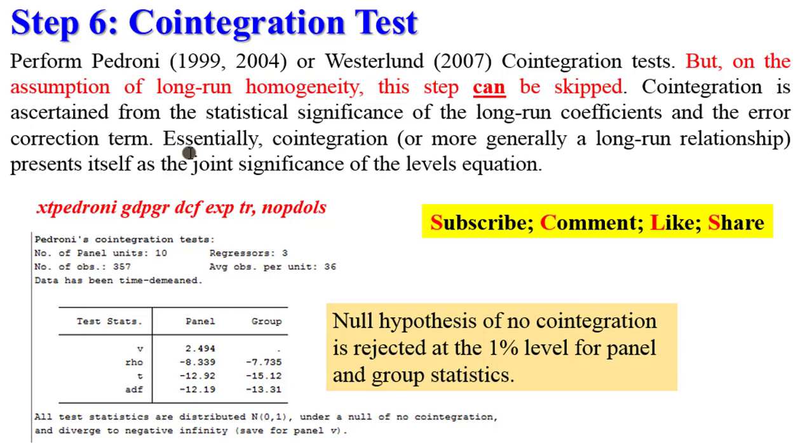If you're assuming long-run homogeneity, you can skip this test. Co-integration is ascertained from the statistical significance of the long-run coefficients and the error correction term. Essentially, co-integration or more generally a long-run relationship presents itself as the joint significance of the levels equation. That means by performing the PMG analysis you can infer co-integration from the statistical significance of the long-run coefficients and the error correction term. So again, you can skip this.